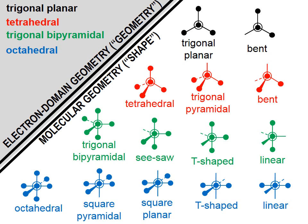If we go back to the upper left, you can see in red letters a tetrahedral electron domain geometry could have several molecular geometries: tetrahedral, if there are four atoms at the end of each of those four domains; trigonal pyramidal, if there are three bonding domains and one unshared pair; or bent, if there are two bonding domains and two unshared pairs.